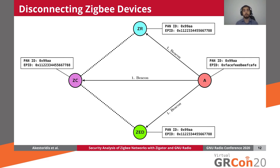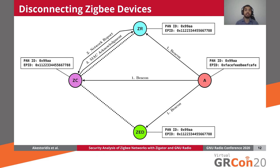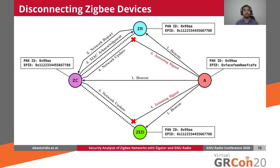The attack starts with the attacker broadcasting a beacon that uses the same PAN ID but a different extended PAN ID in its header fields. That causes the Zigbee router to identify it as a PAN ID conflict, so it transmits a network report packet to the Zigbee coordinator to inform it about that conflict. The Zigbee coordinator then acknowledges that network report and selects a new PAN ID for its network. As it prepares to broadcast that new PAN ID value, the attacker interferes with the transmission of the network update command, which contains this new PAN ID value.